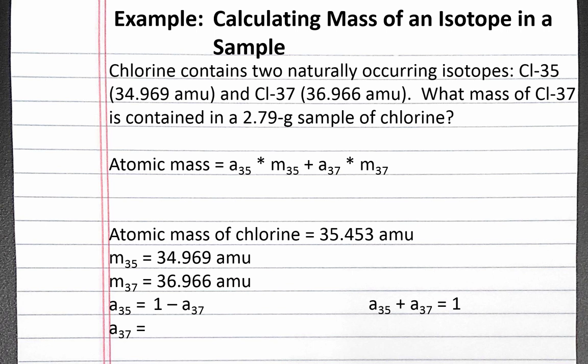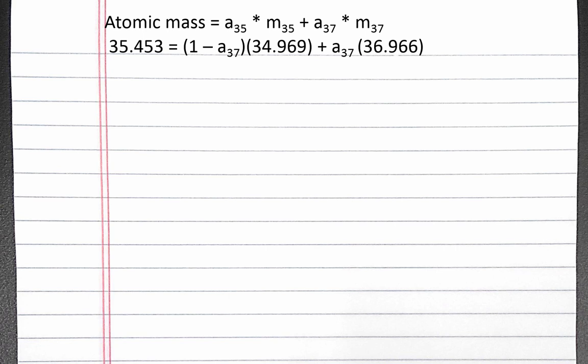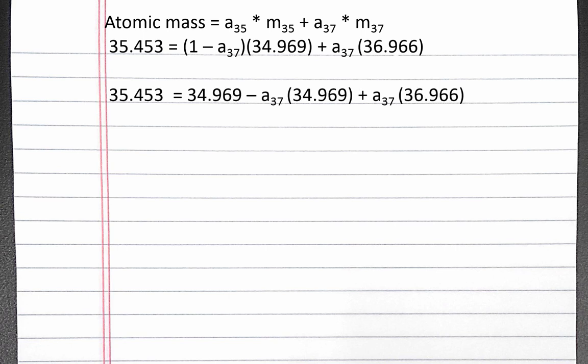We can now substitute all of our values into the atomic mass equation. Notice that the abundance of chlorine-35 has been replaced by 1 minus the abundance of chlorine-37, so we now have one equation with one unknown. Now we need to solve this equation for the abundance of chlorine-37. First, we distribute 1 minus the abundance of chlorine-37 times 34.969. Then we bring all of our numbers to one side of the equation by subtracting 34.969 from both sides.